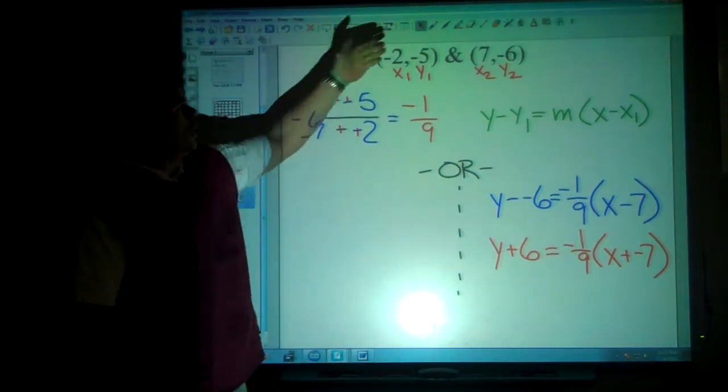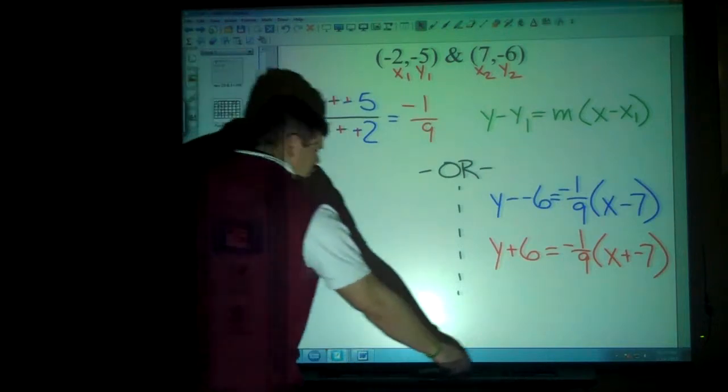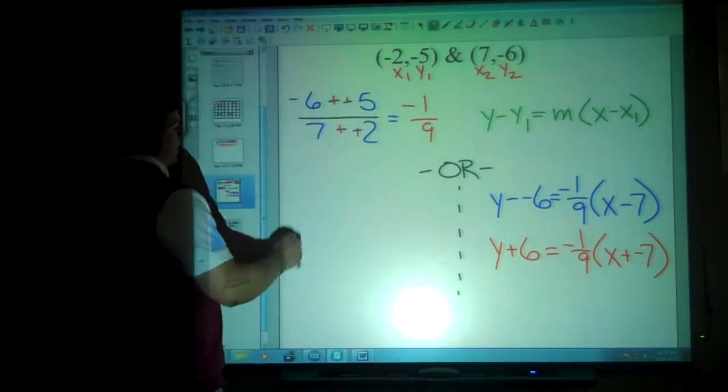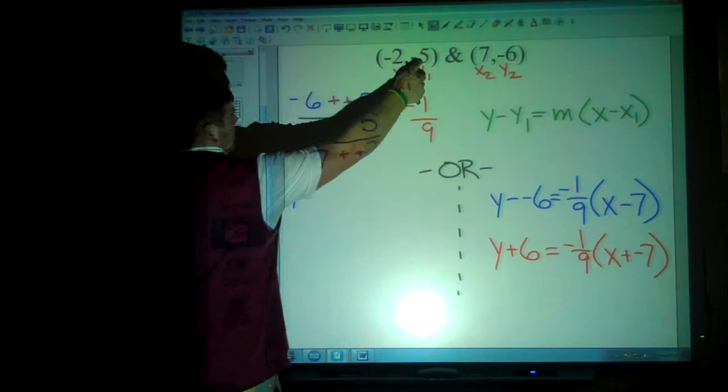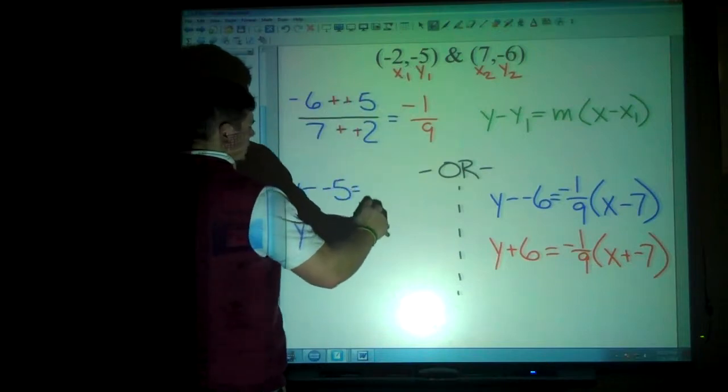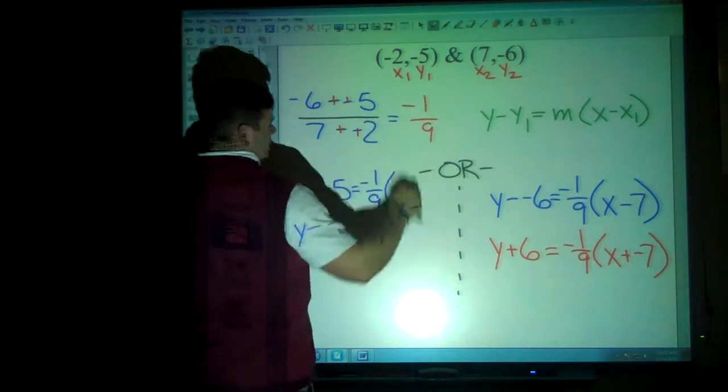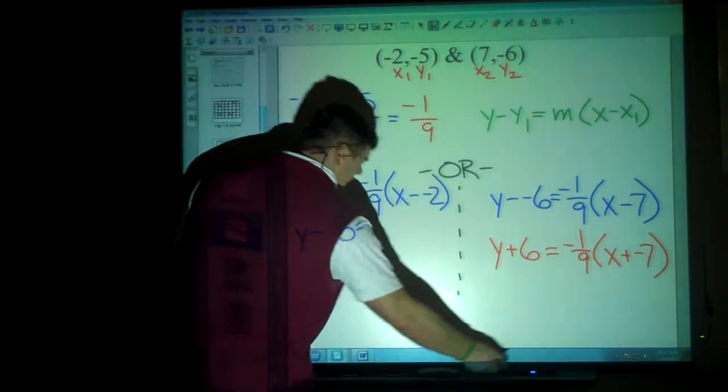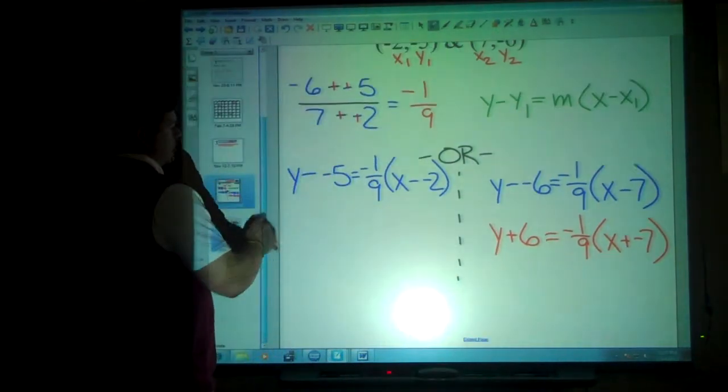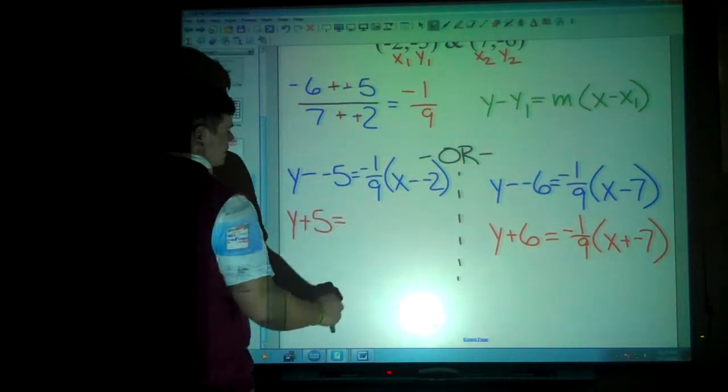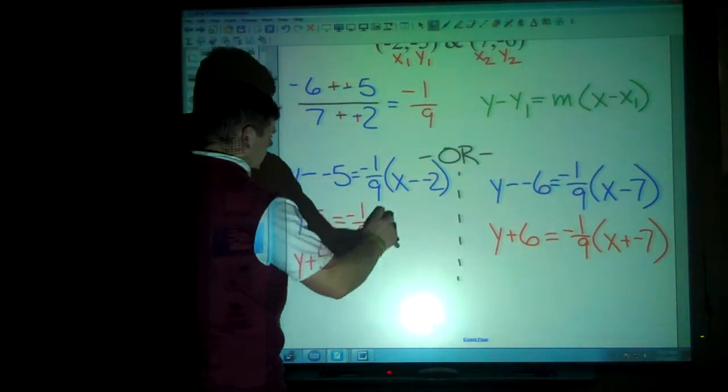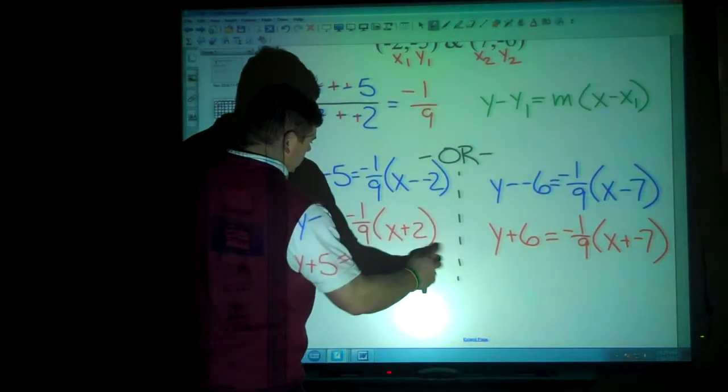And that's if I use the coordinate on the right. If I choose to use the coordinate on the left, then I would have y minus negative 5 is equal to that slope of negative 1 ninth x minus negative 2. And again, if I wanted to change my signs, I could say y plus 5 is equal to the negative 1 ninth x plus 2.